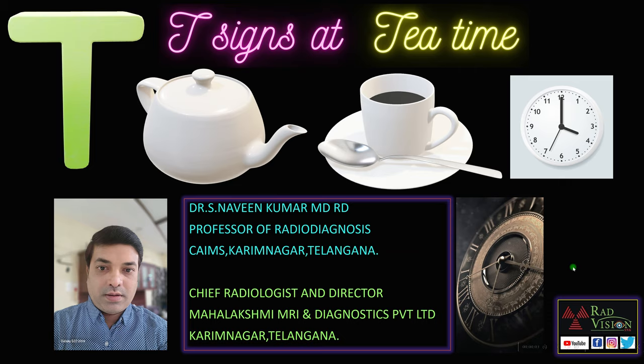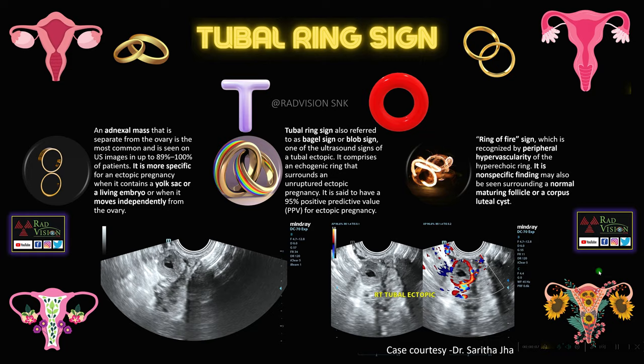Good evening all, welcome to the new session. We will try to see some interesting T signs. First is the tubal ring sign. Whenever you suspect an ectopic pregnancy and you have not seen any gestational sac in the endometrial cavity but have seen an adnexal mass, search for the tubal ring sign. Whenever you see an adnexal mass surrounded by an echogenic ring apart from the uterus and ovaries, definitely suspect ectopic pregnancy. The tubal ring sign has a positive predictive value of 95%.